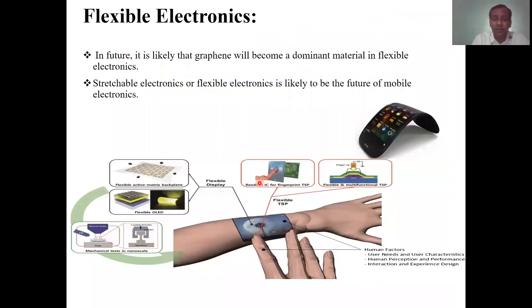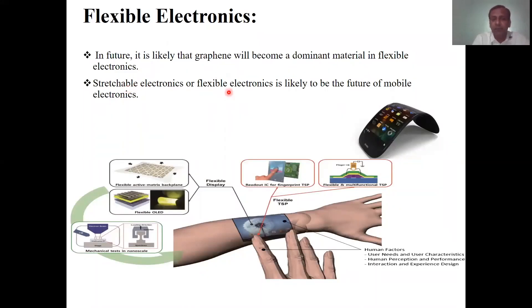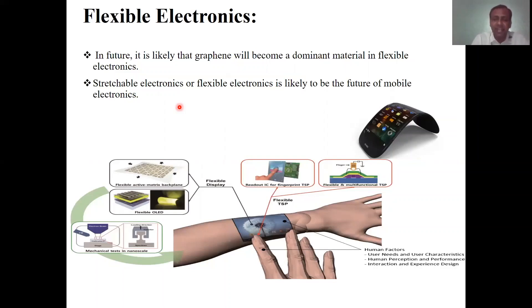Next is flexible electronics. In the future, ZnO is likely to become a dominant material in flexible electronics. Flexible electronics are likely to be the future of mobile electronics as well. In some countries, flexible electronics are already available, and we will see when this technology reaches India.